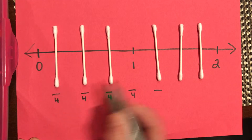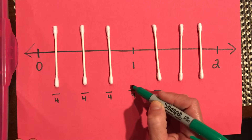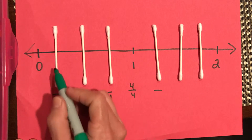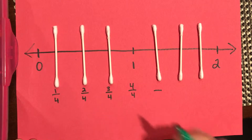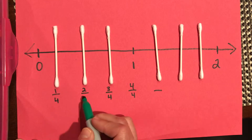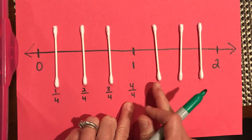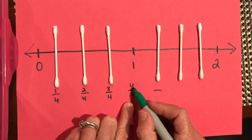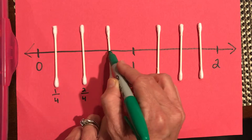So our denominators are all going to be four because this is broken into fourths. The whole number one is how many fourths? Four fourths — one, two, three, four. So this makes one. Fill those in: one fourth, two fourths, three fourths, four fourths.